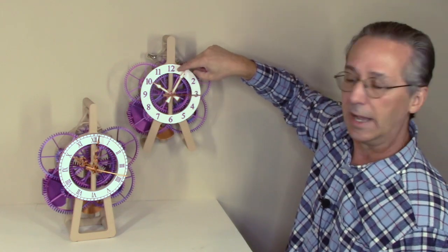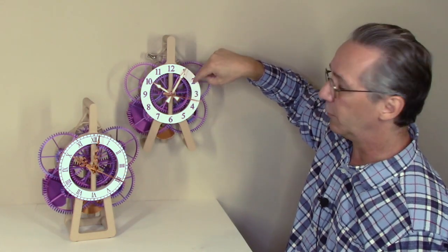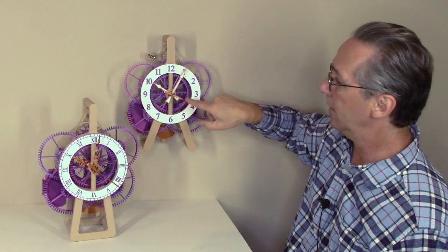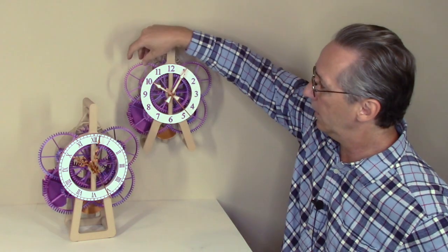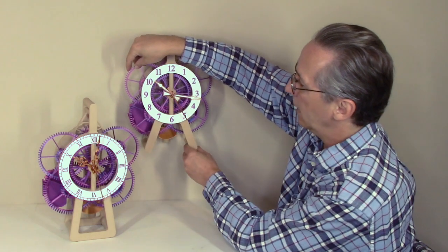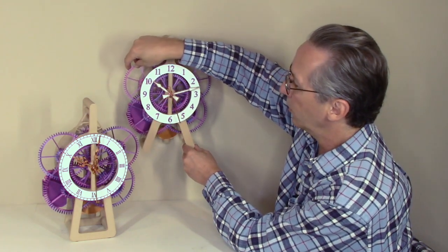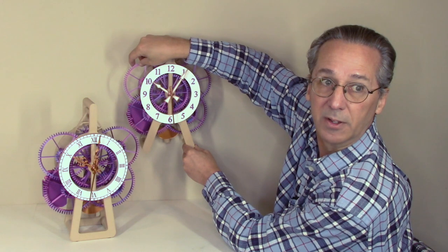My other clocks would allow you to set the time by just pushing on the minute hand. That doesn't work when there's a second hand in the way. So this is an equally acceptable solution of setting the time on the clock.